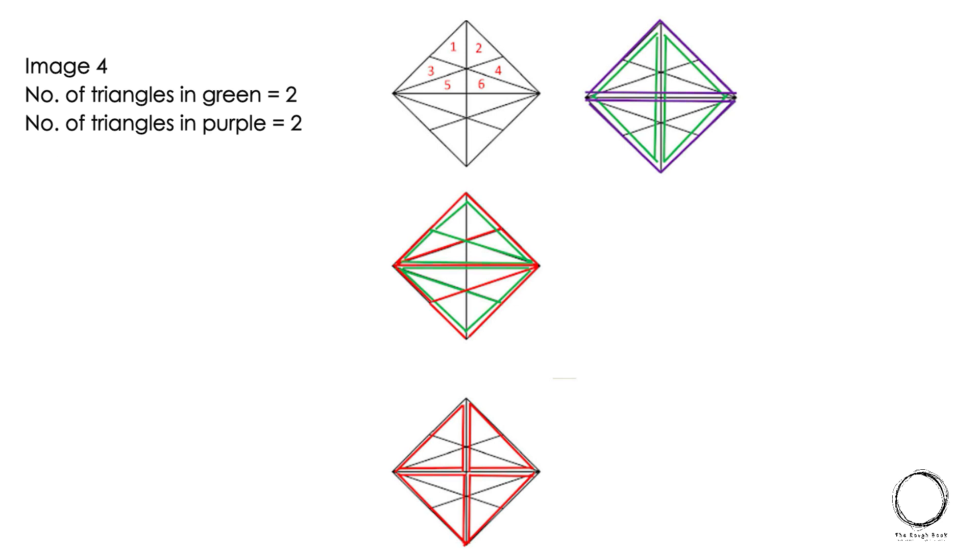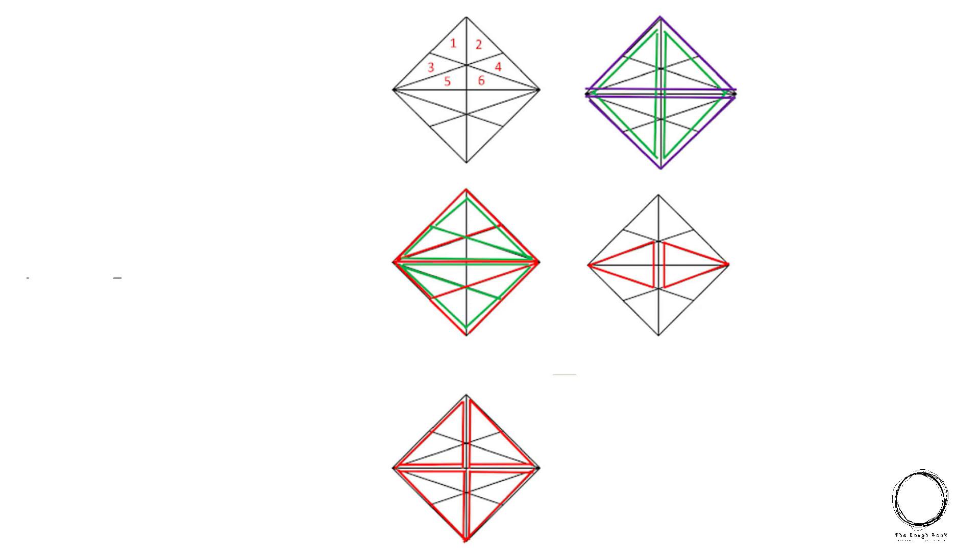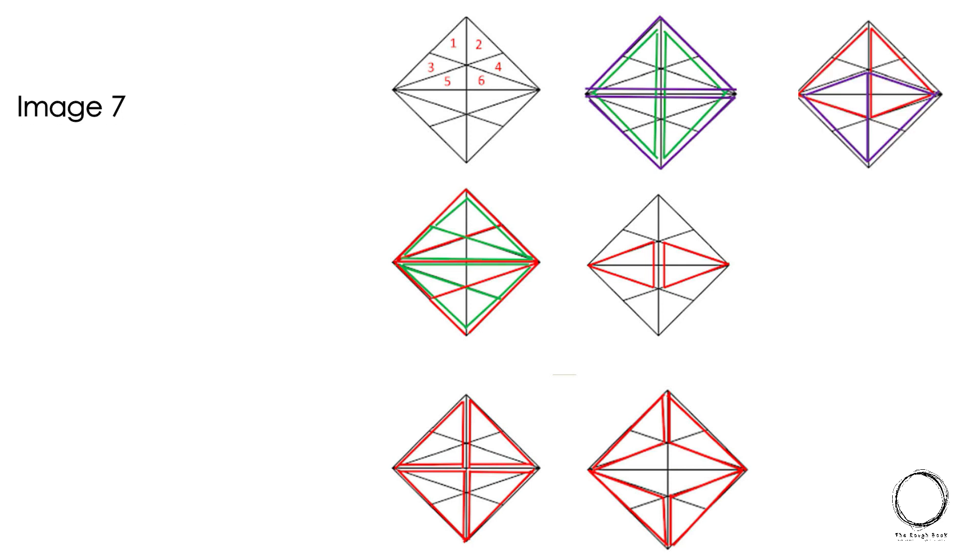Next number of triangles of green equals to 2. Number of triangles in purple equals to 2. Next number of triangles is 2. Number of triangles equals to 4. In the next image number of triangles equals to 4 again. And the last number of triangles equals to 2. Adding all of them up, the right answer is 40 triangles.